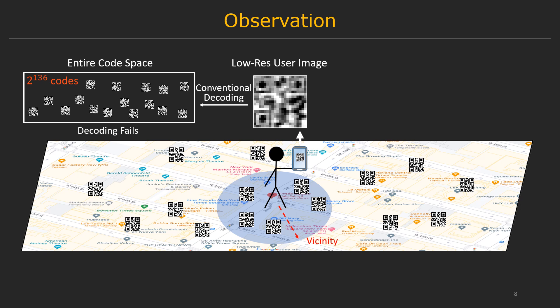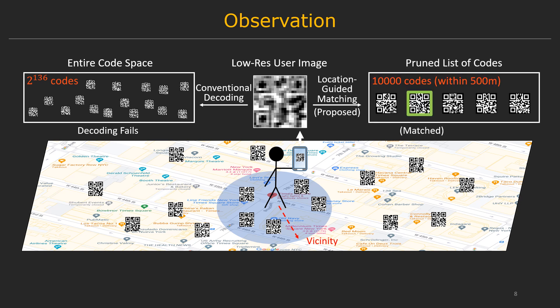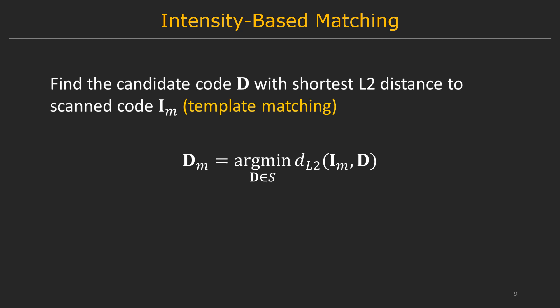But we know that the code being scanned must be within the vicinity of the user, and there's always a limited number of codes in that vicinity — let's say within 500 meters, with 10,000 such codes. What we really need to do is find the most probable match among these 10,000 codes. Specifically, we compare our scanned code to all candidate codes in the vicinity and return the one with the shortest L2 distance, which is similar to template matching in computer vision. This very simple algorithm works very well in practice.